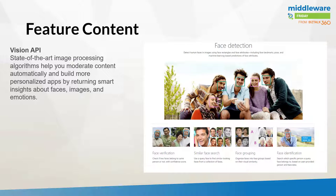As part of our feature content today, we're going to focus on cognitive services. If you recall in Episode 2, as part of our community content section, I referenced 10 different technologies that developers should be learning. One of those was cognitive services, and the Vision API is one of the many APIs available inside of the cognitive services platform. The Vision API is a state-of-the-art image processing algorithm which helps you moderate content automatically and build more personalized apps by returning smart insights about faces, images, and emotions.